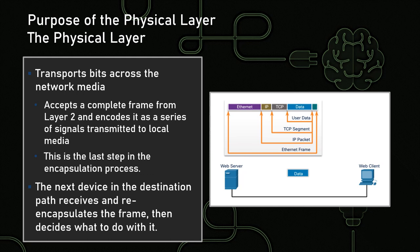The data link layer, layer two, is going to finalize the encapsulation process. Once the data is transmitted, the next device in the path — the next hop, if we're talking about IPv6 — is going to receive that frame, basically peel off the layer two header in order to read it, and then re-encapsulate it, and then decides what to do with it in terms of routing or other transmission.